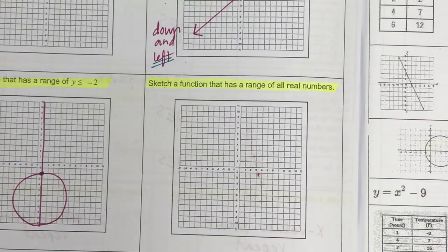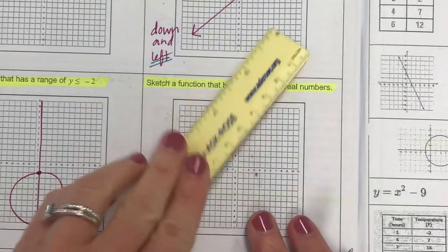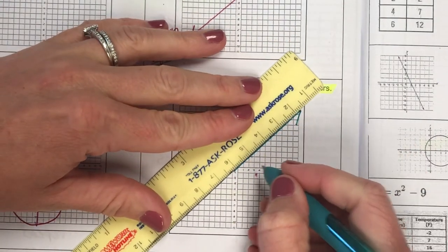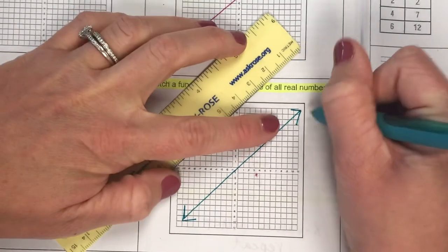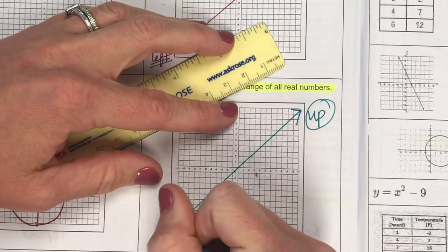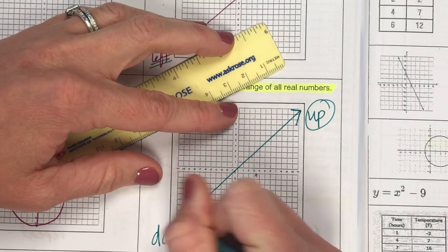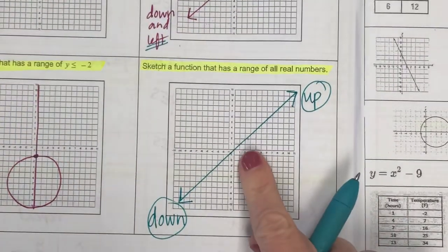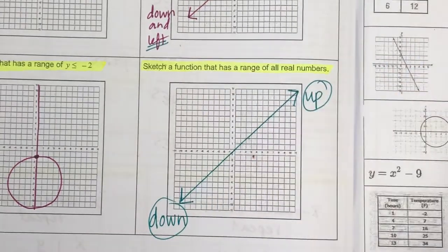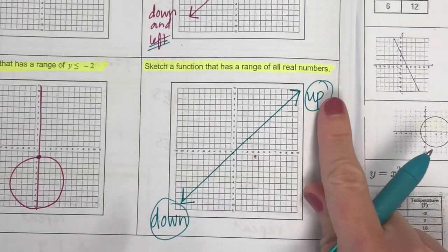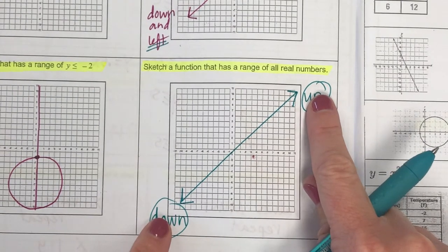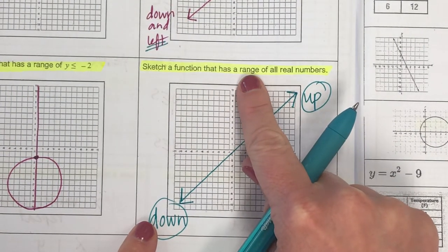I'm going to copy the same picture as best I can. The reason this would have a range of all real numbers is because of the arrow that continues up forever and the arrow that continues down forever. This classifies as a function because a vertical line would cross it only one time, and it goes up forever and down forever — and that is what our range focuses on.